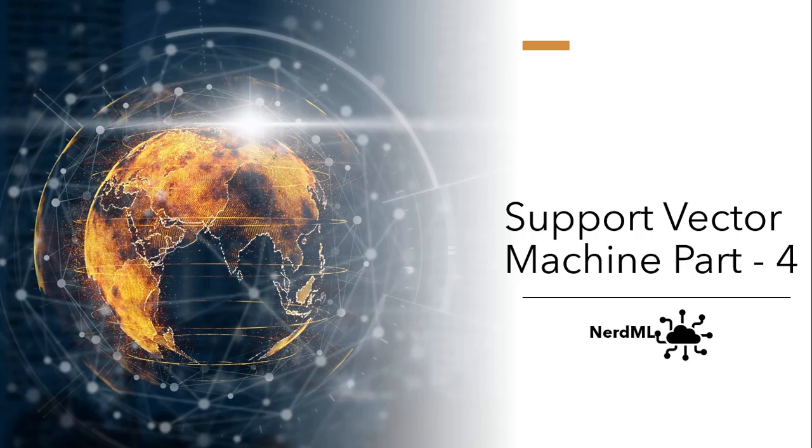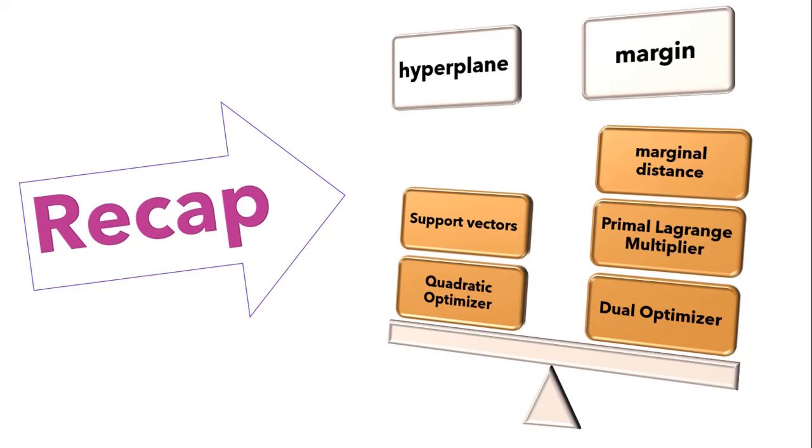Till now we are already familiar with hyperplane, margin, marginal distance, support vectors, quadratic optimizer including both primal Lagrangian and dual optimizer. We have understood how mathematically we can implement all of these. If you haven't watched my previous video on basic intuition of SVM, I would suggest you go and check that video. I have attached video links in the description.